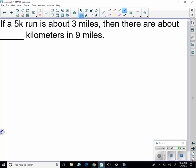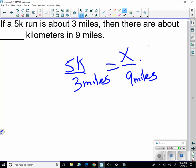So if a 5K run is about 3 miles, then there are about blank kilometers in 9 miles. So 5K is 3 miles. So something will be 9 miles. Well, if I multiply by 9, then I do the same thing on the other side as well. 9 divided by 3 is 3 times 5 is 15. So 15 in the units are kilometers. The miles canceled.